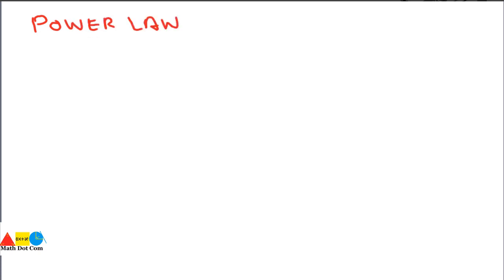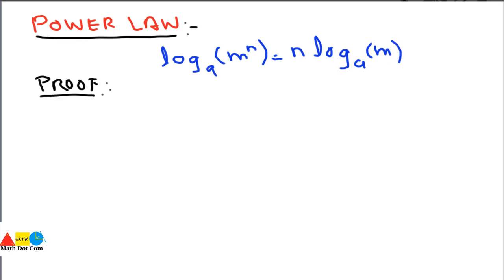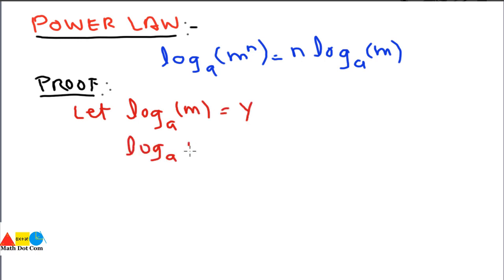Now we move to the third law: the power law of logarithm. It is mathematically stated as: log base a of (m^n) equals n times log base a of m. For the proof, we again make some assumptions.